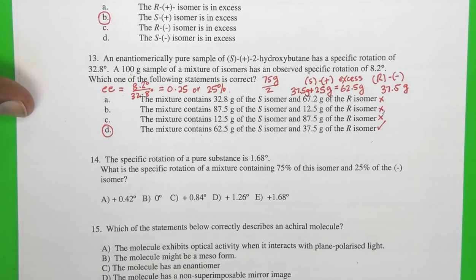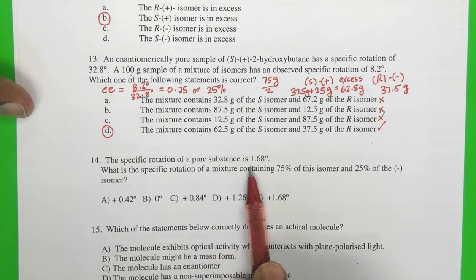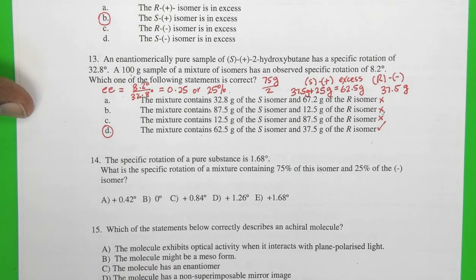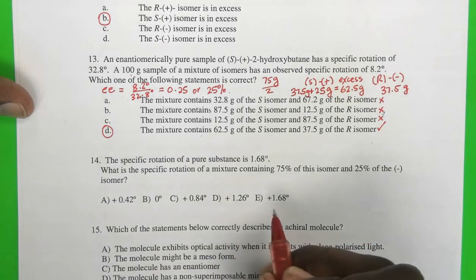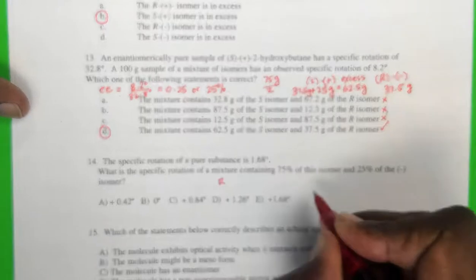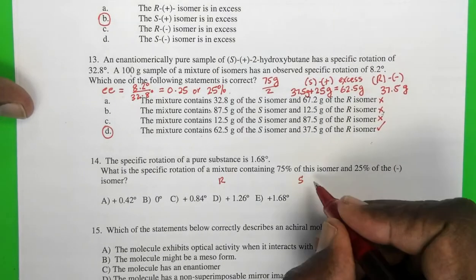In the next example, we have a specific rotation of a pure substance being 1.68 degrees. And then the question says, what is the specific rotation of a mixture containing 75% of this isomer and 25% of the minus isomer. So in this case, if I had two samples, assume one is R and the other is S. The S must be minus.